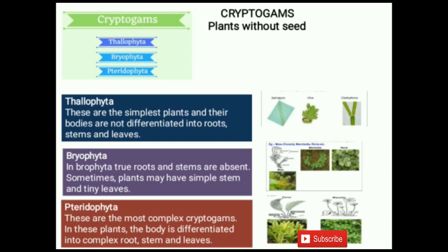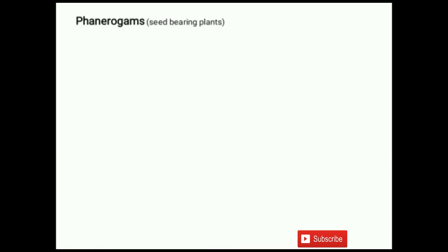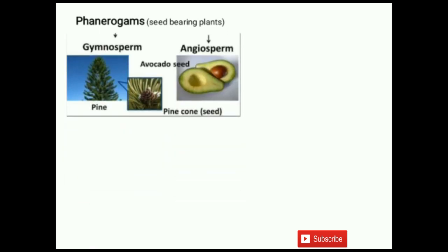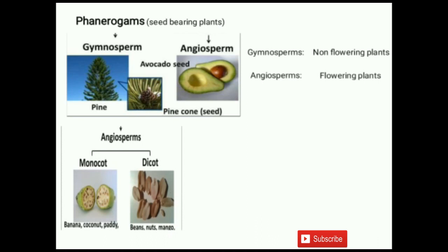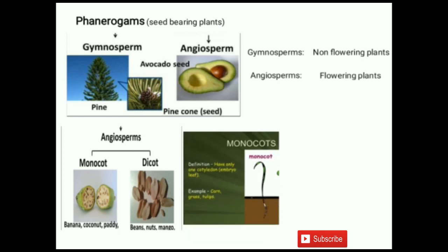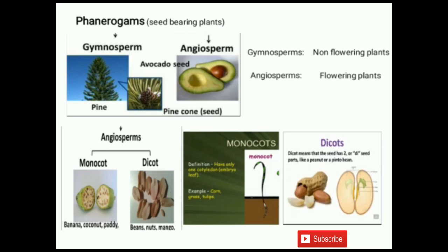The second division is phanerogames, or the seed-bearing plants. Phanerogames is divided into two groups: Gymnosperms — the non-flowering plants — and Angiosperms — the flowering plants. Angiosperms is divided into two groups: Monocots and Dicots. Monocots have only one cotyledon — the seed leaf. Dicots means the seed has two seed parts, like a peanut.